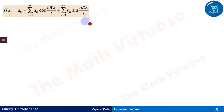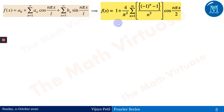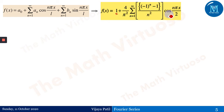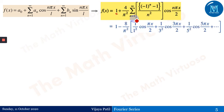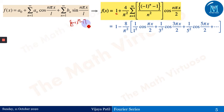Now writing f(x) by substituting a₀=1, bₙ=0, and aₙ = 4/(n²π²)·[(−1)ⁿ−1]: the series becomes f(x) = 1 + (4/π²) Σ [(−1)ⁿ⁻¹ / n²] cos(nπx/2). This minus sign arises from the factor (−1)ⁿ−1 present in the term.